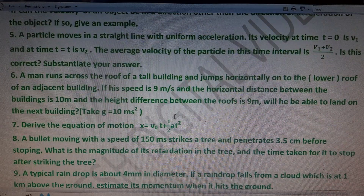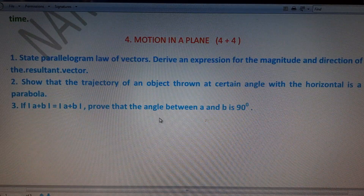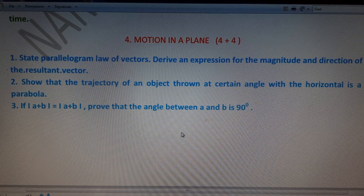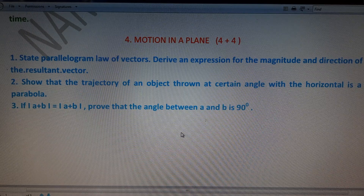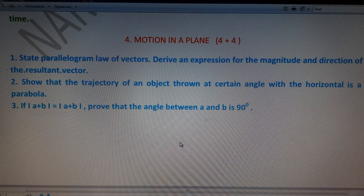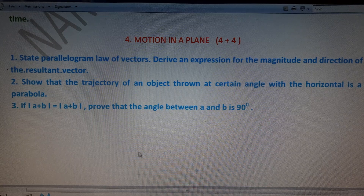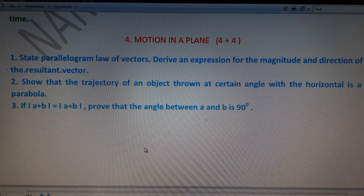Chapter 4 (Motion in a Plane): two four-mark questions will be asked. First question: state the parallelogram law of vectors and give the equation for the magnitude of the resultant vector. Second: show that the trajectory of a projectile thrown at an angle with the horizontal is a parabola. Third: if |A + B| = |A − B|, prove that the angle between A and B is 90 degrees.